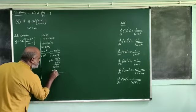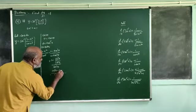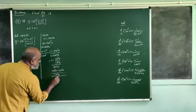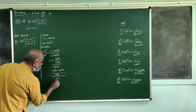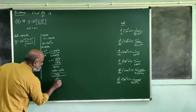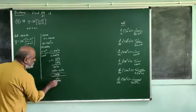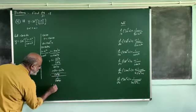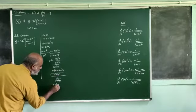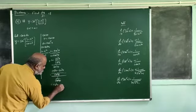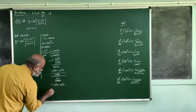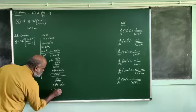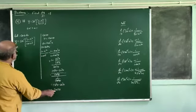What is cos squared theta minus sin squared theta? Dividing through by cos squared theta, we get cos squared theta over cos squared theta. Cos squared theta minus sin squared theta simplifies to cos 2 theta.